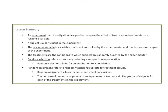In summary: an experiment investigates the effect of a treatment on a response. The subject is the participant — in our example, the plots of land. The response is the variable not controlled by the experimenter — the yield of corn. The treatment is the condition subjects are randomly assigned to — the fertilizer. Random selection means randomly selecting samples from a population, which allows you to generalize to the population. Random assignment is essential in experiments; it allows for cause and effect conclusions and creates similar groups for treatments so that outside factors don't come into play.